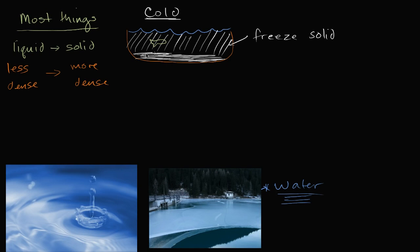But what's neat about water is it does not follow this pattern. When we're talking about water, when we go from liquid water to solid ice, we actually get less dense. So liquid water is more dense, and ice is less dense. This is why ice floats.